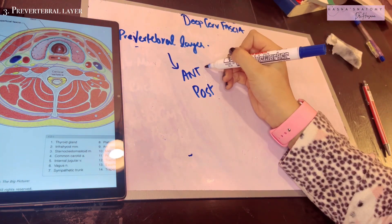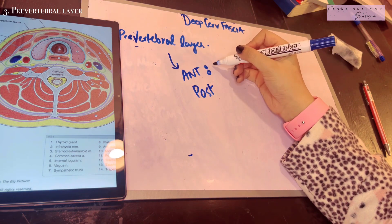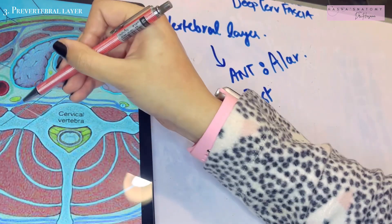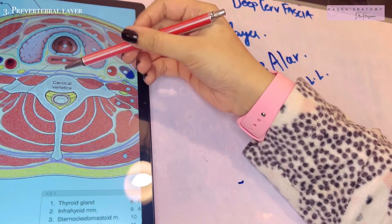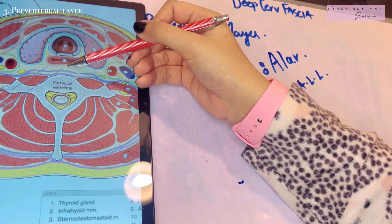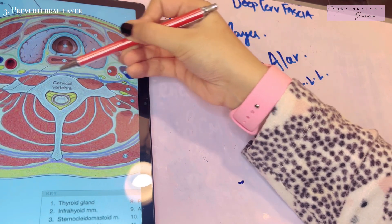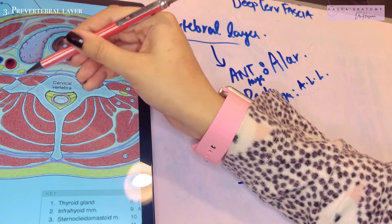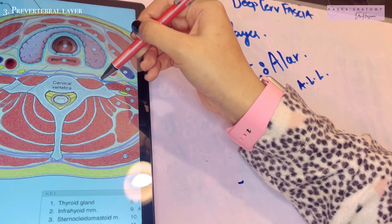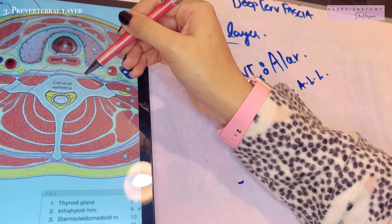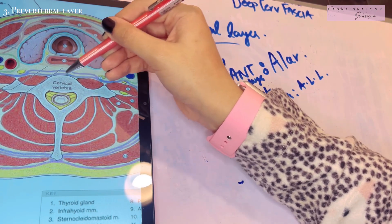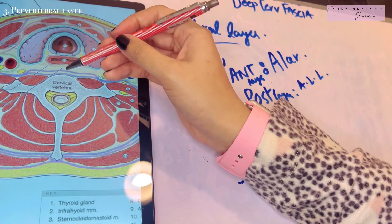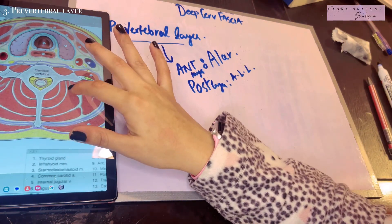The anterior subdivision of the pre-vertebral fascia is known as the alar fascia. Anterior to the pre-vertebral layer is the retropharyngeal space — the space between the buccopharyngeal fascia and the pre-vertebral fascia. The alar fascia divides this retropharyngeal space into two parts: an anterior part and a posterior part. The posterior part is known as the dangerous area of the neck, because if any infection occurs there it can spread to the entire vertebral column.